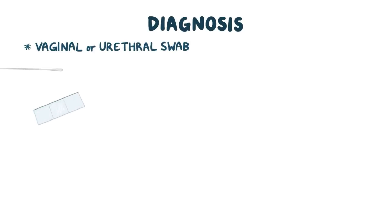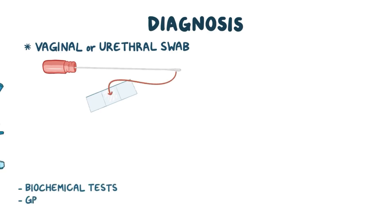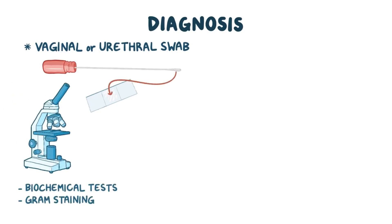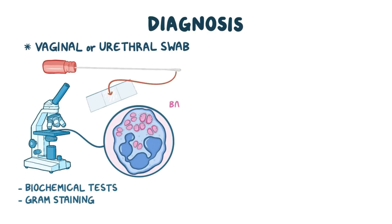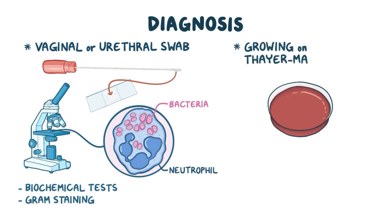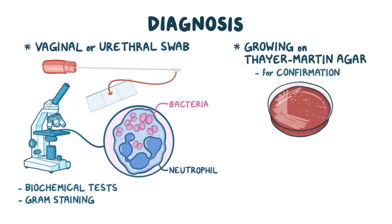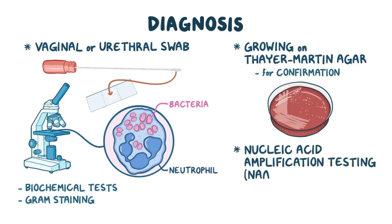Diagnosis is usually done with a vaginal or urethral swab, which is then smeared on a slide for biochemical tests and gram staining, which reveals pink, coffee bean shaped bacteria within neutrophils. Growing the bacteria on Thayer-Martin Agar is required for confirmation, but nucleic acid amplification testing, or NAAT, can also be done, and this consists of identifying the bacterial genetic material.